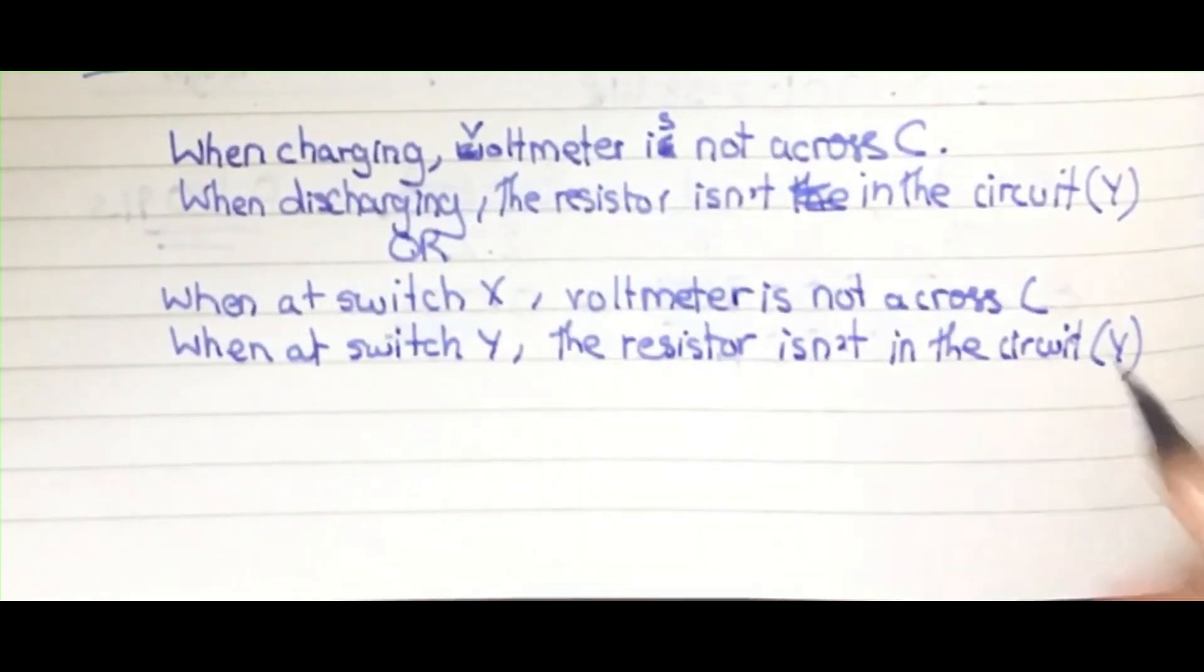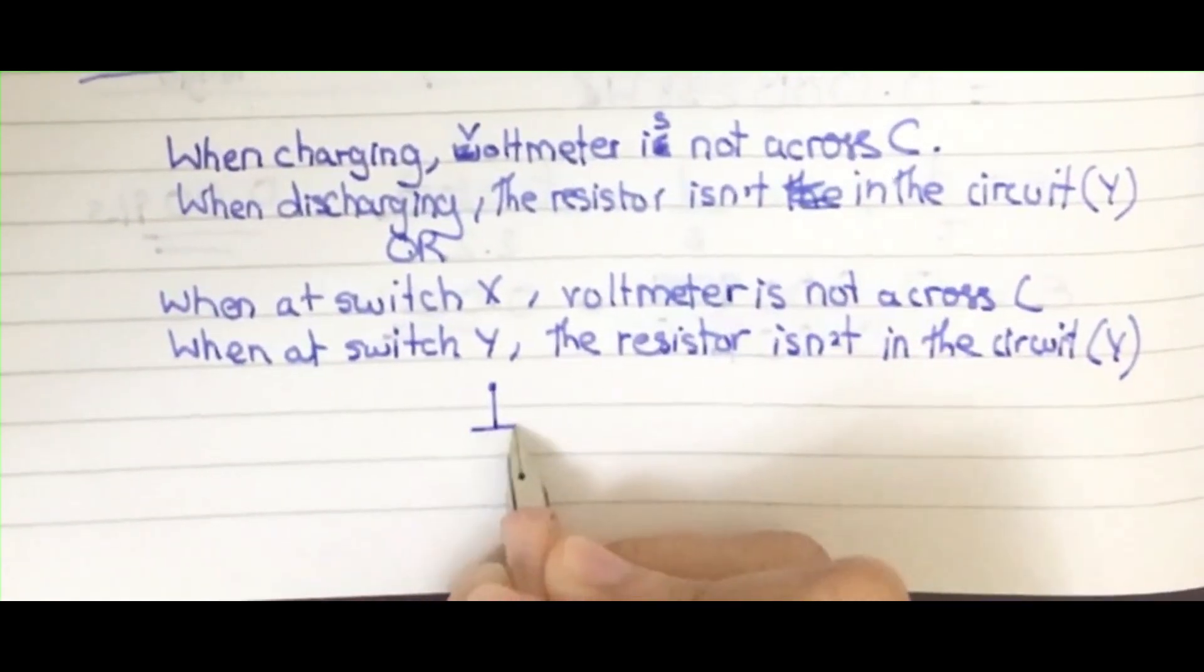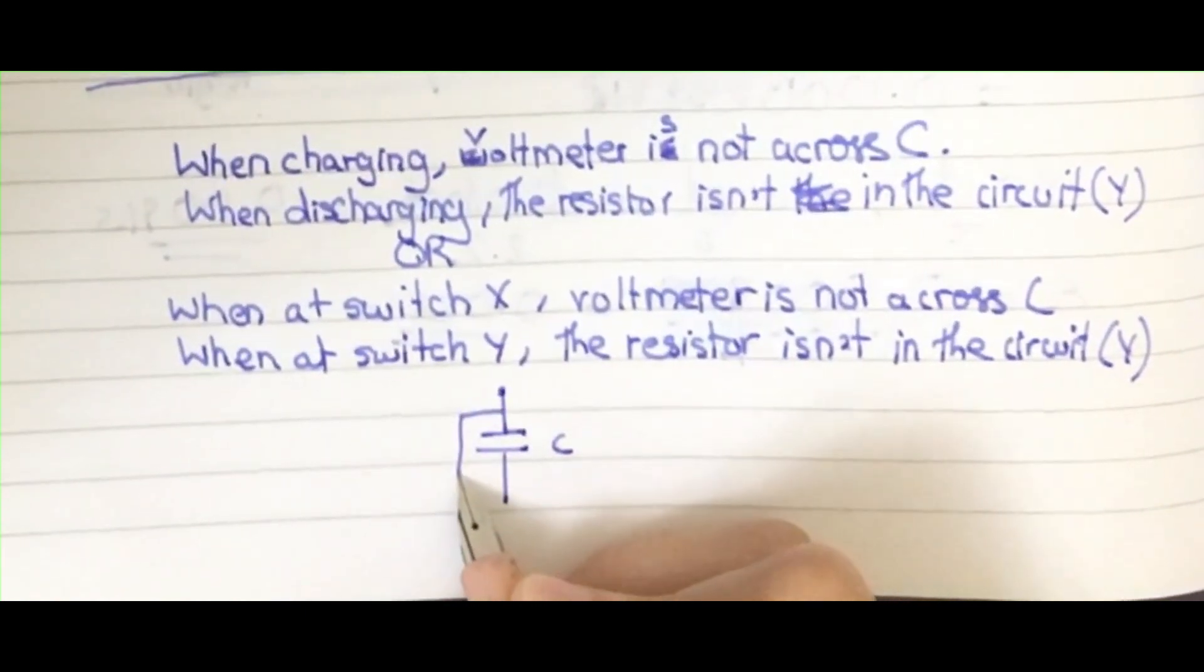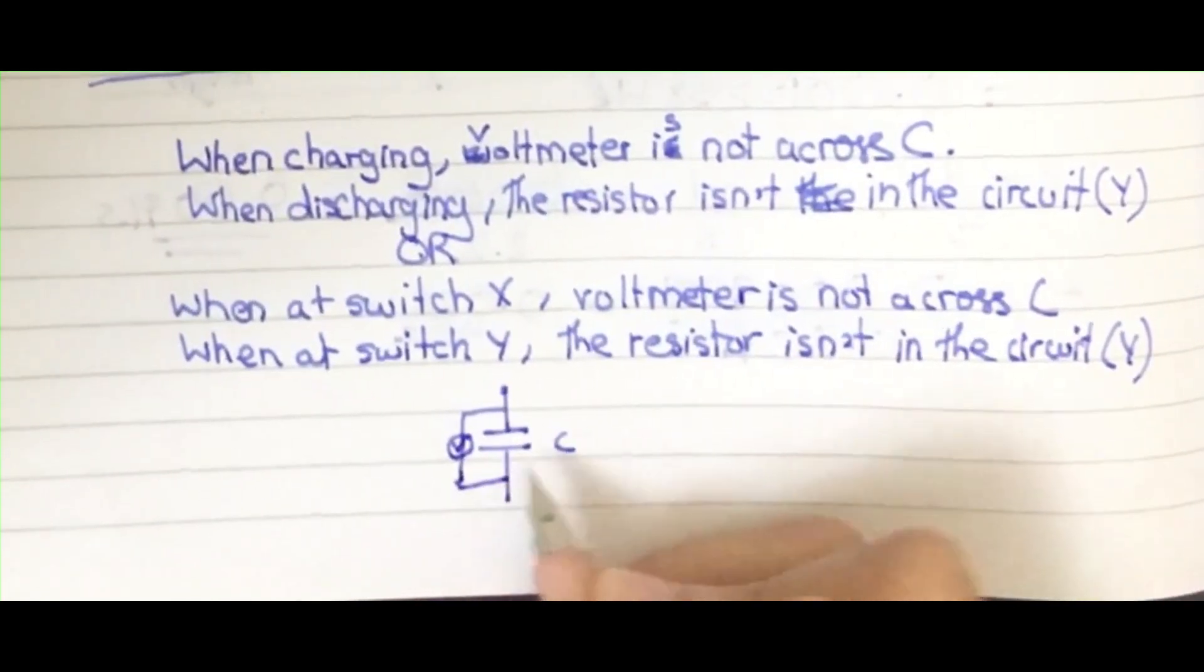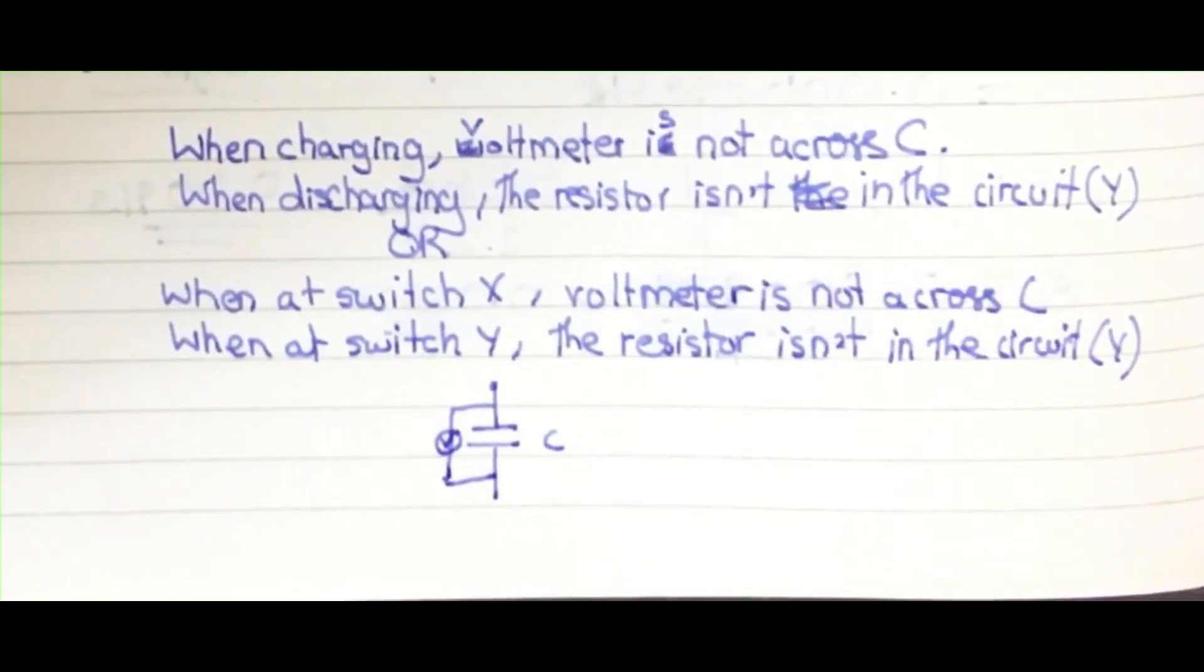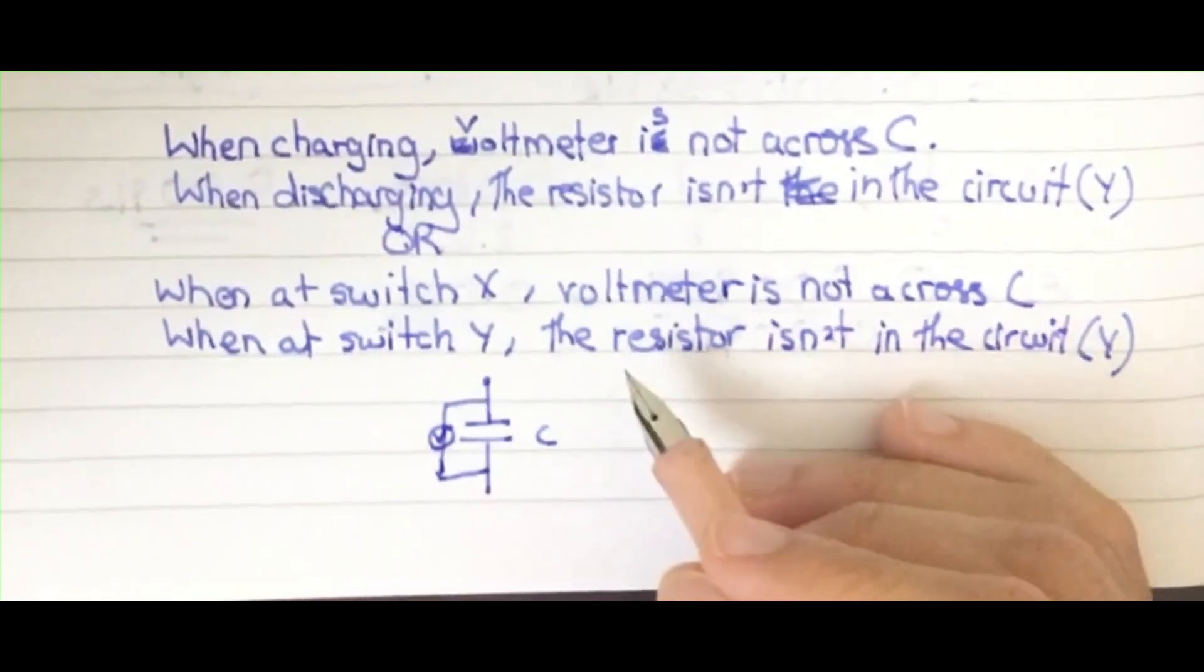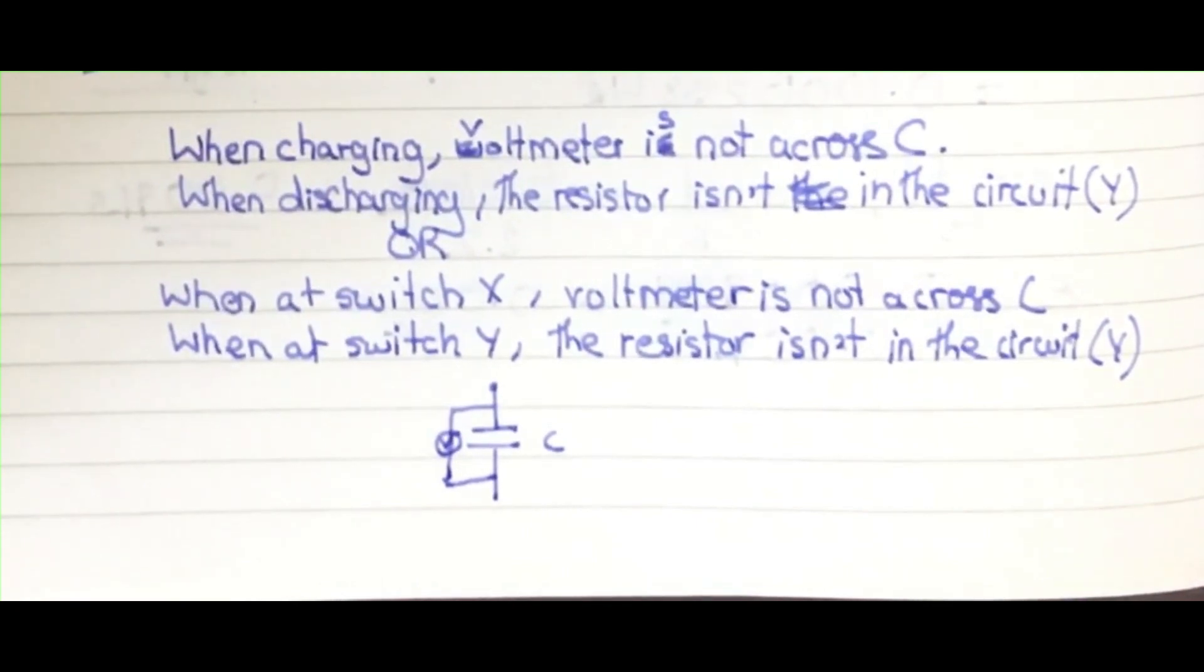When charging, the voltmeter is not across C. What I mean by this is that you have this capacitor here—it should have the voltmeter across it to calculate or see whether the capacitor is charged or not with the battery given. If the battery is 12 volts, is it showing 12 volts in the voltmeter? To see whether it has fully charged or not.